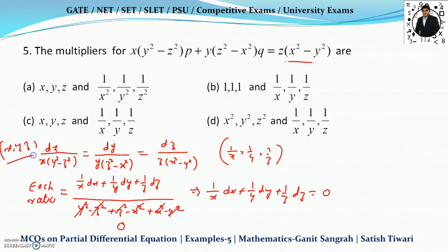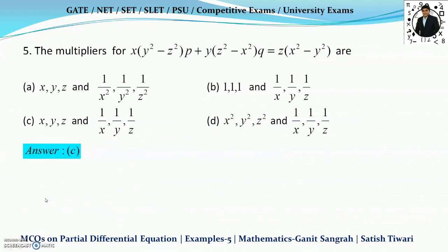So therefore we can say that x, y, z is also a multiplier. So tell me which option is correct here. Yes, it is option C.